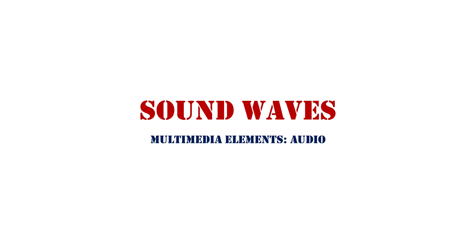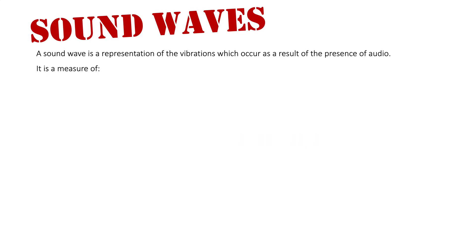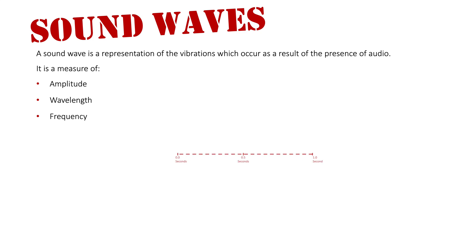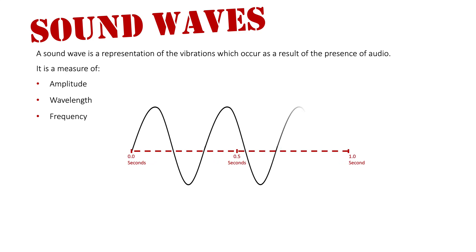Multimedia elements: audio and sound waves. A sound wave is a representation of the vibrations which occur as a result of the presence of audio. It is a measure of amplitude, wavelength, and frequency. I'm going to put a sound wave on my screen right now, going for a duration of a second. A sound wave is analog data, as most real-world data is, and we talk about this in contrast with digital data, which is what computers understand.